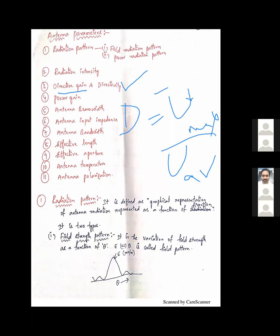Power gain is defined as the ratio of power radiated by a reference antenna to power radiated by the test antenna.